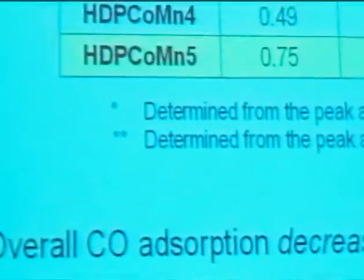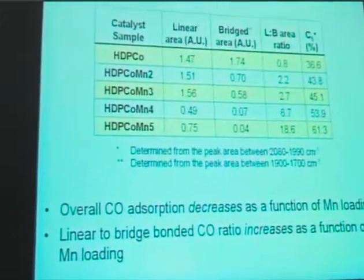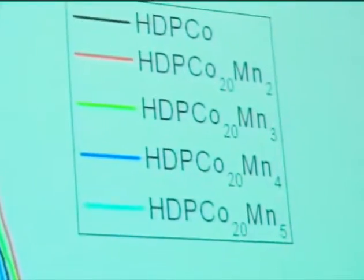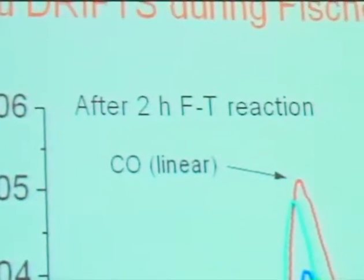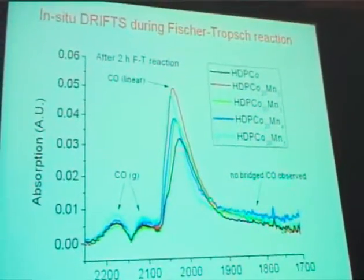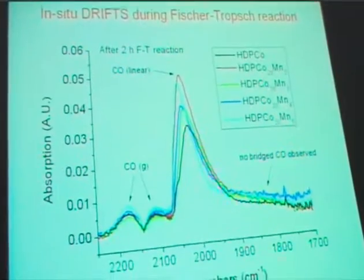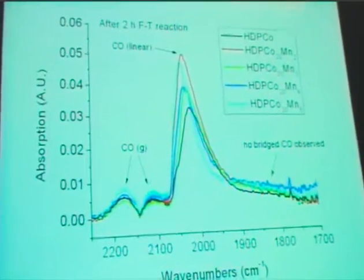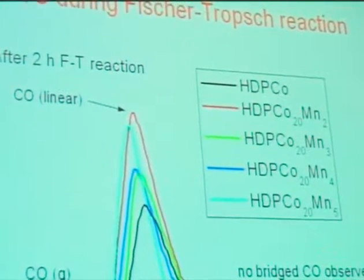This linear-to-bridge ratio increase coincides with more C5+ selectivity. To summarize: overall CO adsorption decreases, and the linear-to-bridge CO ratio increases as a function of manganese loading. We also applied the DRIFTS infrared approach during reaction — CO hydrogenation. The CH stretching region showing hydrocarbon buildup is very complex so I will not consider it here. But for CO, you see only linear CO under reaction conditions — no bridged CO at all. And you see the same shift trend when you have more manganese on the catalyst, which is in line with the electron donation withdrawal effect already explained.